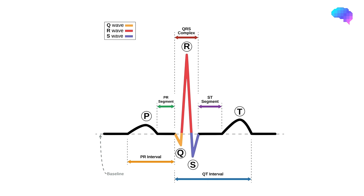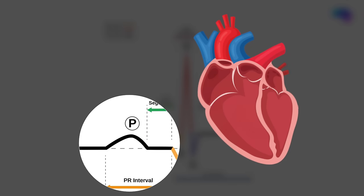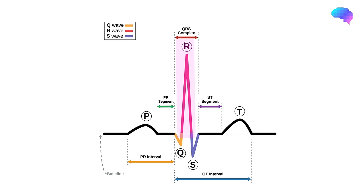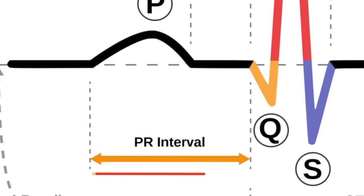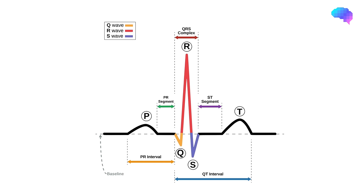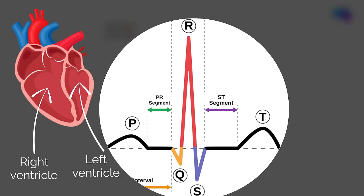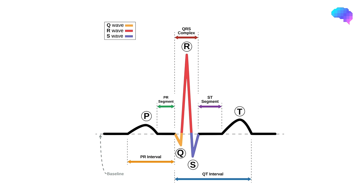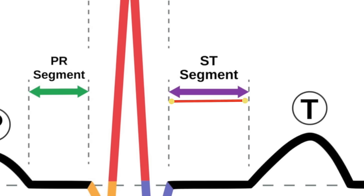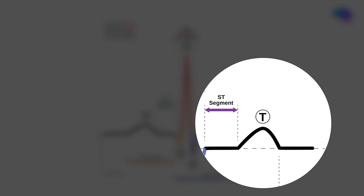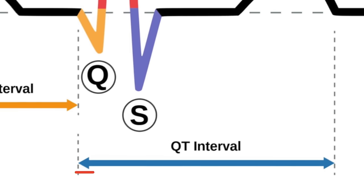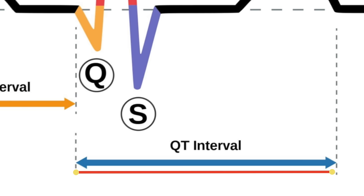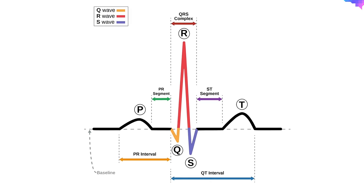Here we can see the different components of an ECG cycle. P waves represent atrial depolarisation or contraction. In healthy individuals there should be a P wave preceding each QRS complex. The PR interval begins at the start of the P wave and ends at the beginning of the Q wave, representing the time for electrical activity to move between the atria and ventricles. The QRS complex represents the depolarisation or contraction of the ventricles, appearing as three closely related waves: the Q, R and S wave. The ST segment is an isoelectric line representing the time between depolarisation and repolarisation of the ventricles. The T wave represents ventricular repolarisation, appearing as a small upwards deflection after the QRS complex. The QT interval begins at the start of the QRS complex and finishes at the end of the T wave, representing the time taken for the ventricles to depolarise and then repolarise.